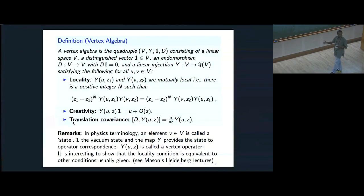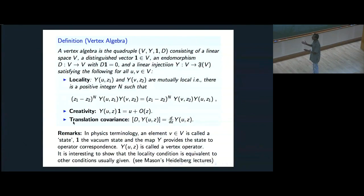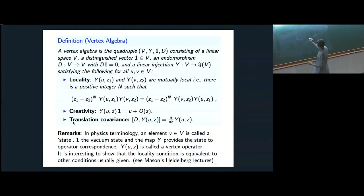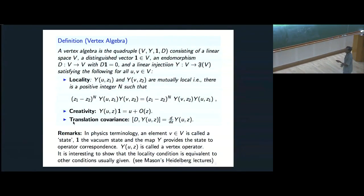It says that if you have two operators — U and V belong to V, giving two operators — composing Y(U, Z1) and Y(V, Z2), if you multiply by some positive power of (Z1 minus Z2)^N for some positive integer N, it will vanish. This is a kind of commutativity. If you think in terms of functions, if F(Z,W) times (Z minus W)^N goes to zero, that suggests the function is singular as Z approaches W. This tells you how singular it has become.